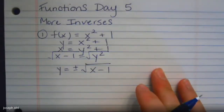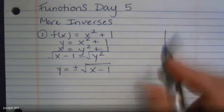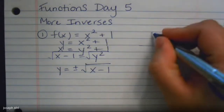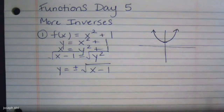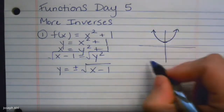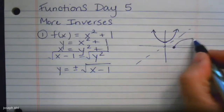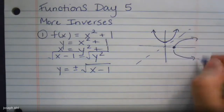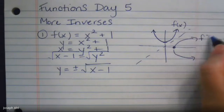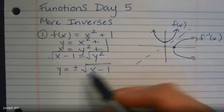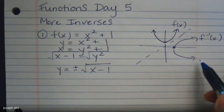That would be the equation for the inverse. What's interesting is that if you graph x² + 1, you remember x² is a parabola shifted up one unit because of the plus one. If you reflect that over the line y = x, you wind up getting what looks like a sideways parabola. This is f(x), and this relation is the inverse. The plus or minus gives you the top half and the bottom half of this graph.